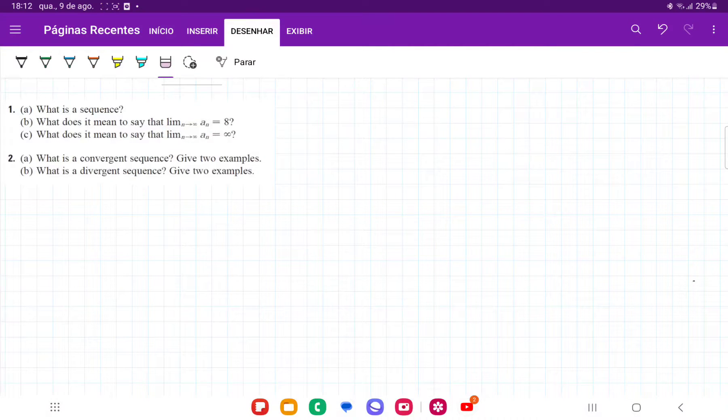So for number one, it's asking us three questions. It begins with, what is a sequence? Well, a sequence, we can say that it is an ordered list. So a sequence is an ordered list of numbers.